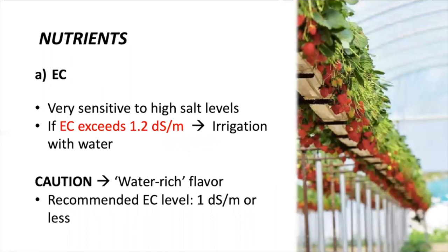The strawberry is unique and can differ from other crops in terms of nutrition content. When using a nutrient recipe, we need to always consider keeping electrical conductivity under 1.0 dS/m. When electrical conductivity exceeds 1.2 dS/m, we need to irrigate with water to avoid salt accumulation in the substrate. Electrical conductivity for strawberries should be low, so we need to pay attention to our water source in order to provide only the nutrients required by this crop. Strawberry can be really different from other fruiting crops like tomato or cucumber, for example.